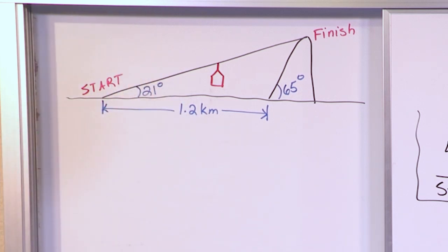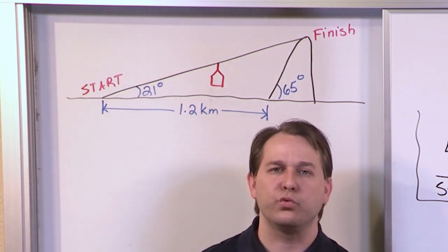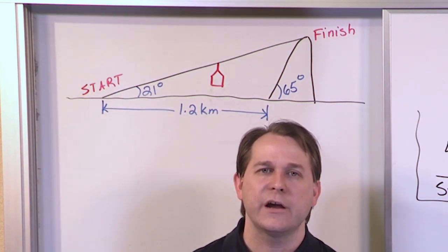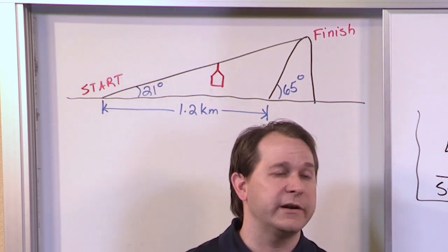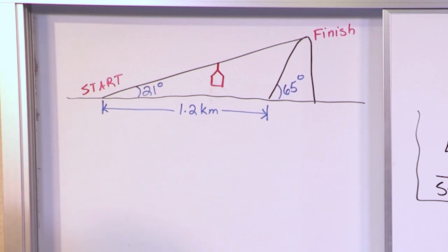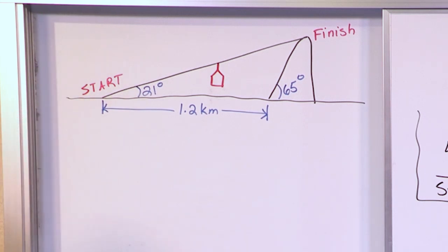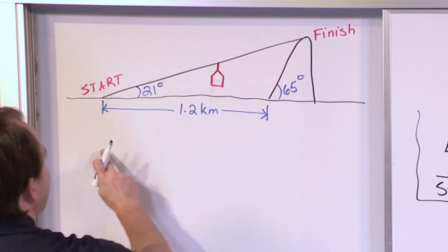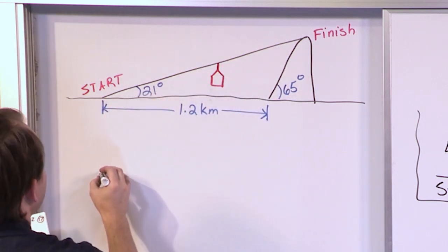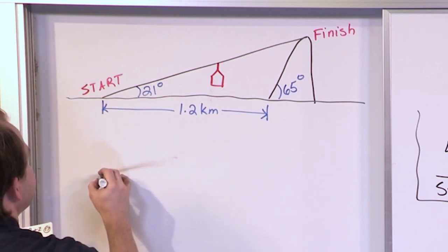My advice for any word problem is to redraw it. Draw a clean, nice triangle with all the information, then look at the law of sines, law of cosines, and see if you have enough information to solve it. So we're going to get rid of the mountain and all the other stuff and draw it like a real triangle would look in a trig or geometry class.